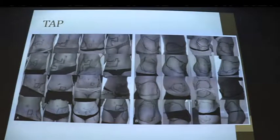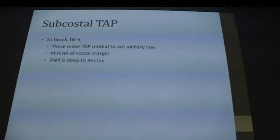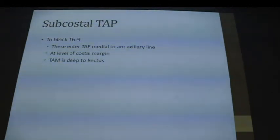The subcostal TAP was designed to get around the problem of limited cranial extension, and it's said to reach T6 to T9. The issue is that these nerves enter the TAP medial to the anterior axillary line. You place the ultrasound probe at the level of the costal margin, and at this position the transverse abdominis muscle is actually deep to the rectus, so it looks slightly different to other approaches to the TAP block.